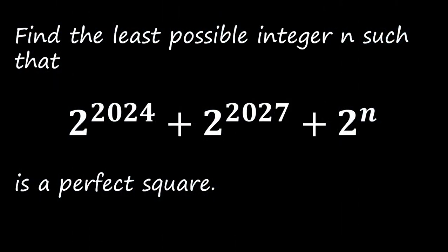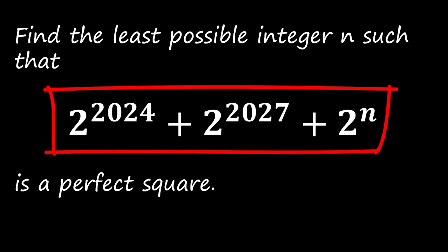Here is the problem. Find the least possible integer n such that 2 to the power of 2024 plus 2 to the power of 2027 plus 2 to the power n is a perfect square.